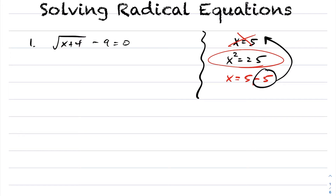So whenever you square both sides in an equation, you introduce the possibility of an extraneous root.